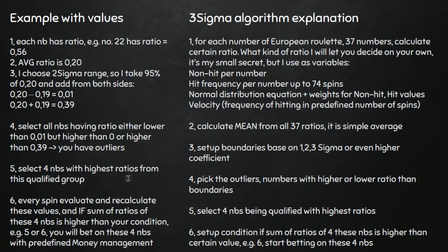But I'm not playing immediately. I recalculate all these values every single spin, and I set up my conditions. As I said, I have a range. For example, if the sum of the ratios of these four numbers is reaching a certain value, like five or six in my case, I start to play. And this is how I apply the algorithm three sigma.